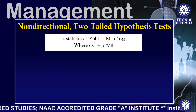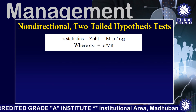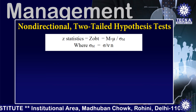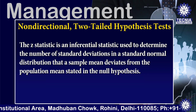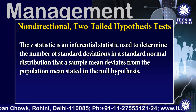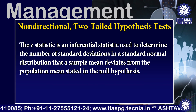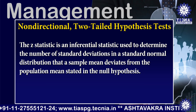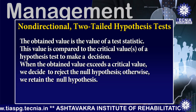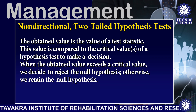Z statistic (Z obtained) = (M − mu) / sigma_m, where sigma_m = sigma / sqrt(N). The Z statistic is an inferential statistic used to determine the number of standard deviations in a standard normal distribution that a sample mean deviates from the population mean stated in the null hypothesis. The obtained value is the value of the test statistic, and it is compared to the critical values of the hypothesis test to make a decision.